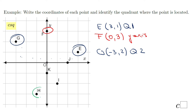Point H: from the origin, we move one left and three down. One left means negative one, three down means negative three. That will be in quadrant three.